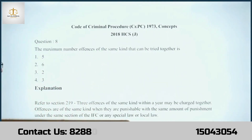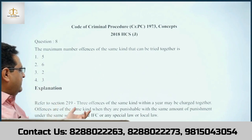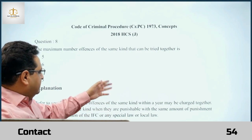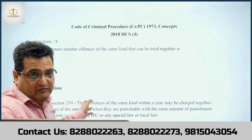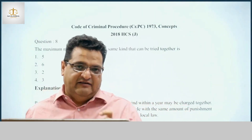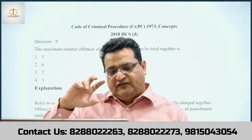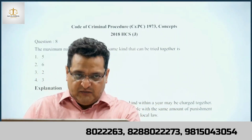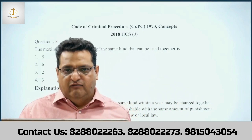The maximum number of offenses of the same kind that can be tried together is three. This is under Section 219 — joinder of charges. If a person commits the same kind of offense up to three times within one year, those can be tried in a single trial. Section 219 is an exception to the general provision that there must be a distinct charge for every offense tried separately. Offenses of the same kind means offenses carrying the same kind of punishment — maximum three in the last 12 months.